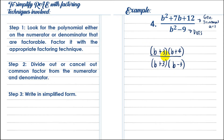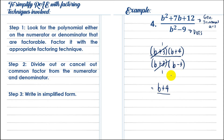Step 2: cancel out the common factor. We are cancelling factors, not terms. The common factor is b plus 3, which cancels to 1. We have 1 times b plus 4 over 1 times b minus 3, giving the final answer: b plus 4 all over b minus 3. Note: you cannot cancel the b's here because they are not factors.